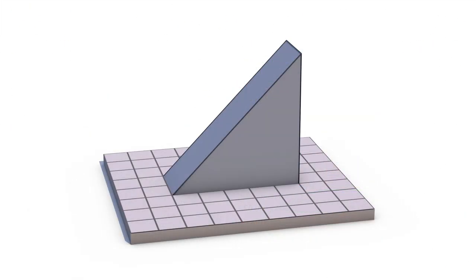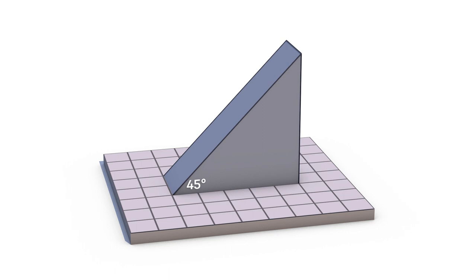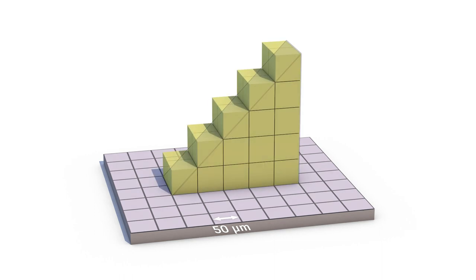For a shape with a certain slope, say 45 degrees, and a printer with a certain XY resolution, for the Ember that's 50 microns, there is an optimum layer thickness. If your layers are too thick, you aren't getting the best XY resolution that you can. And if your layers are too thin, you're printing extra layers that are not helping.